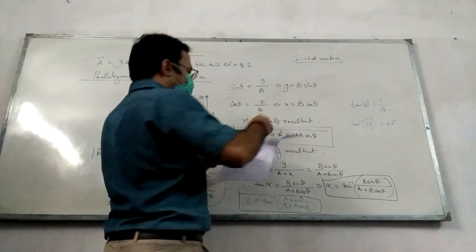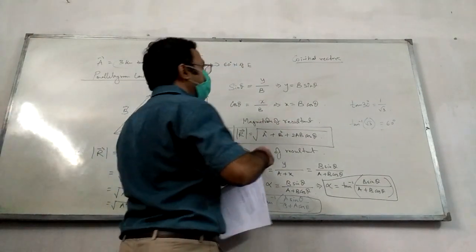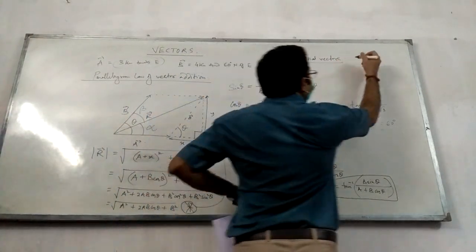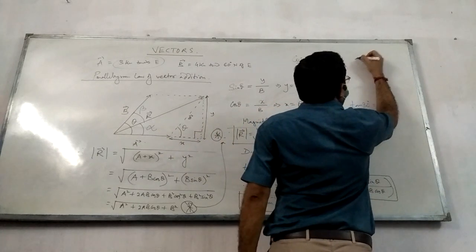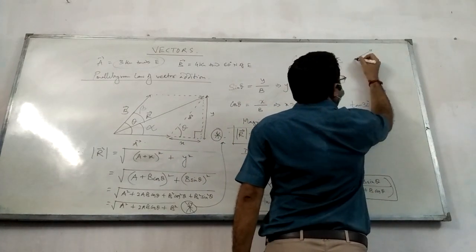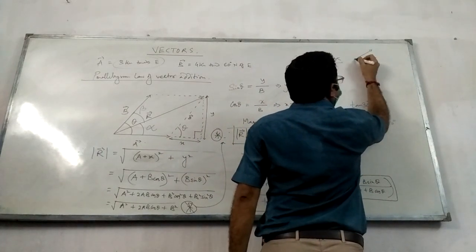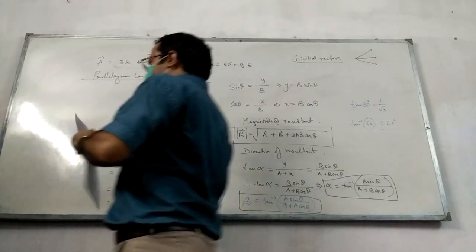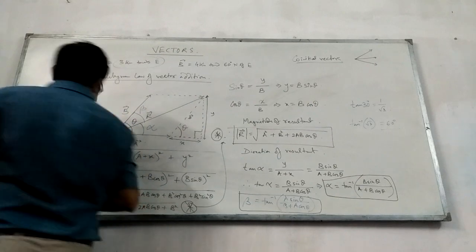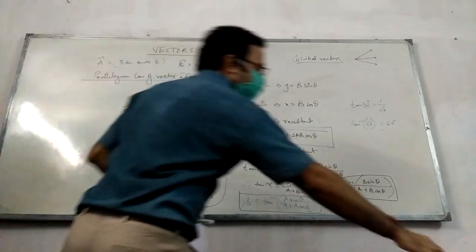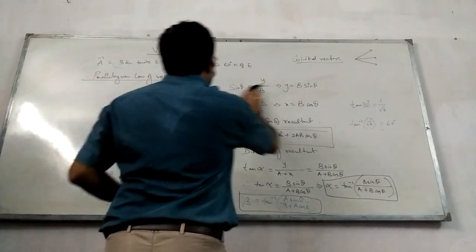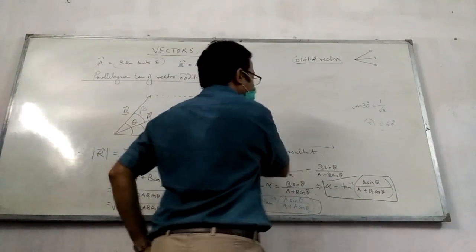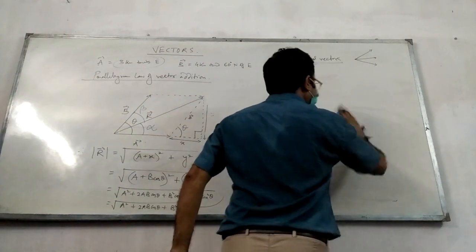So there are some definitions we need to know. Co-initial vectors are the vectors which are starting from the same point.